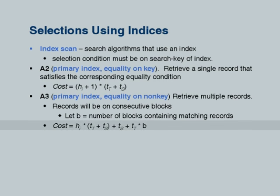Now suppose I still have a primary index but the selection is an equality on a non-key. Then I will find the first record, but there are many more records with the same value. The good thing is that since it is a primary index, the relation is sorted on this attribute, so all those records are consecutive in the file. I just have to read them one after another with no more seeks. The cost becomes: (H_I * (T_T + T_S)) plus T_S to find the first record, plus T_T times B to transfer all B consecutive blocks.